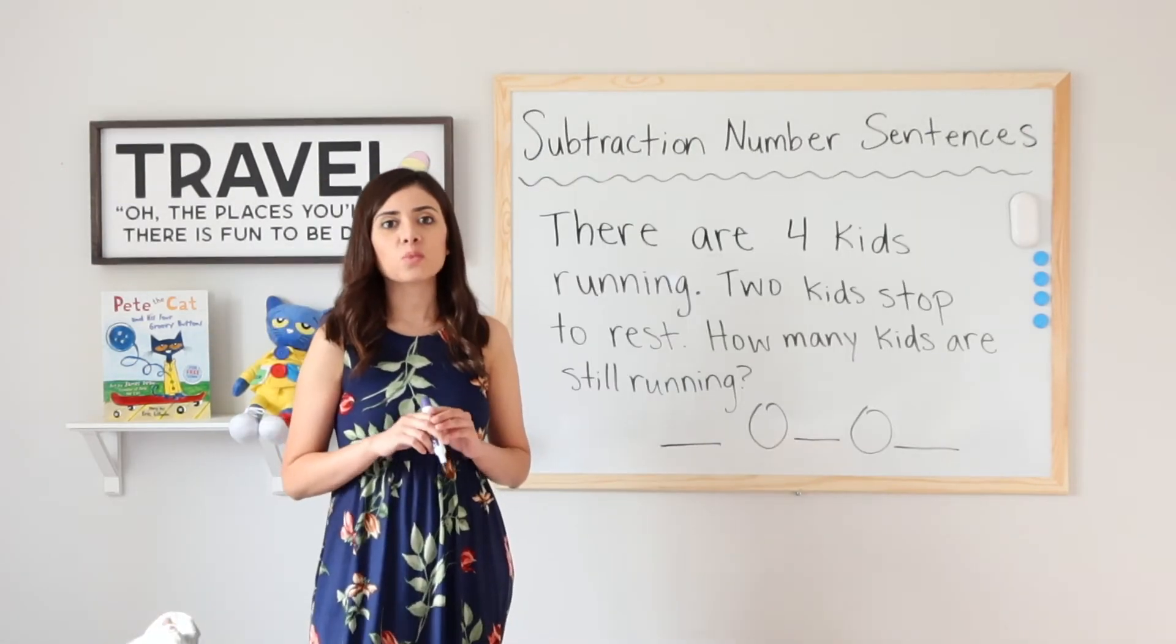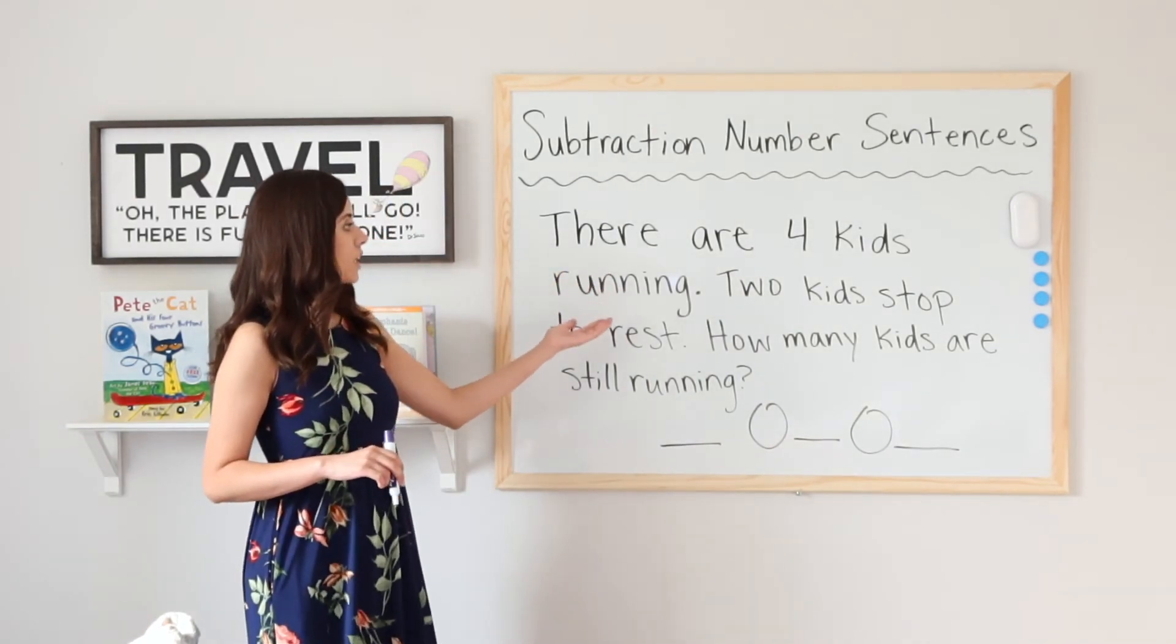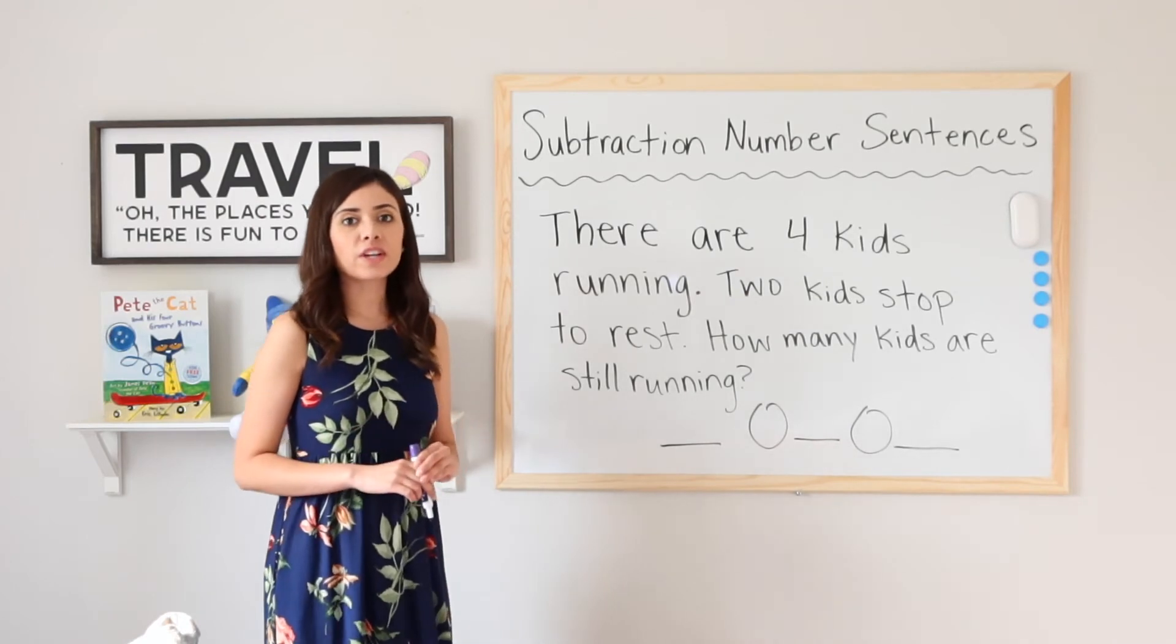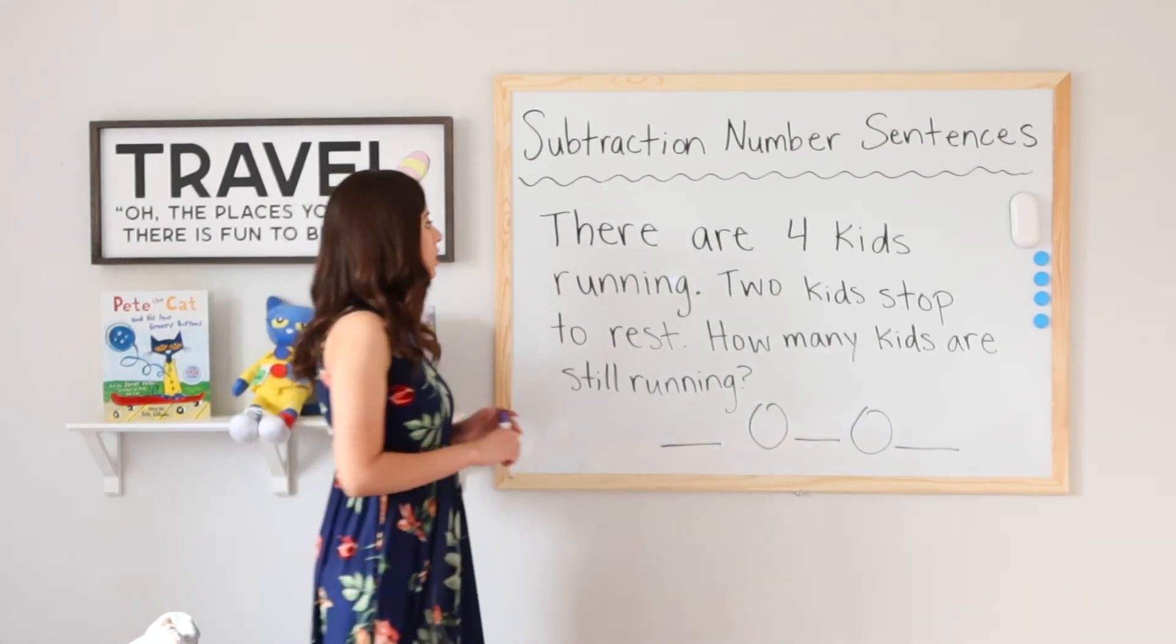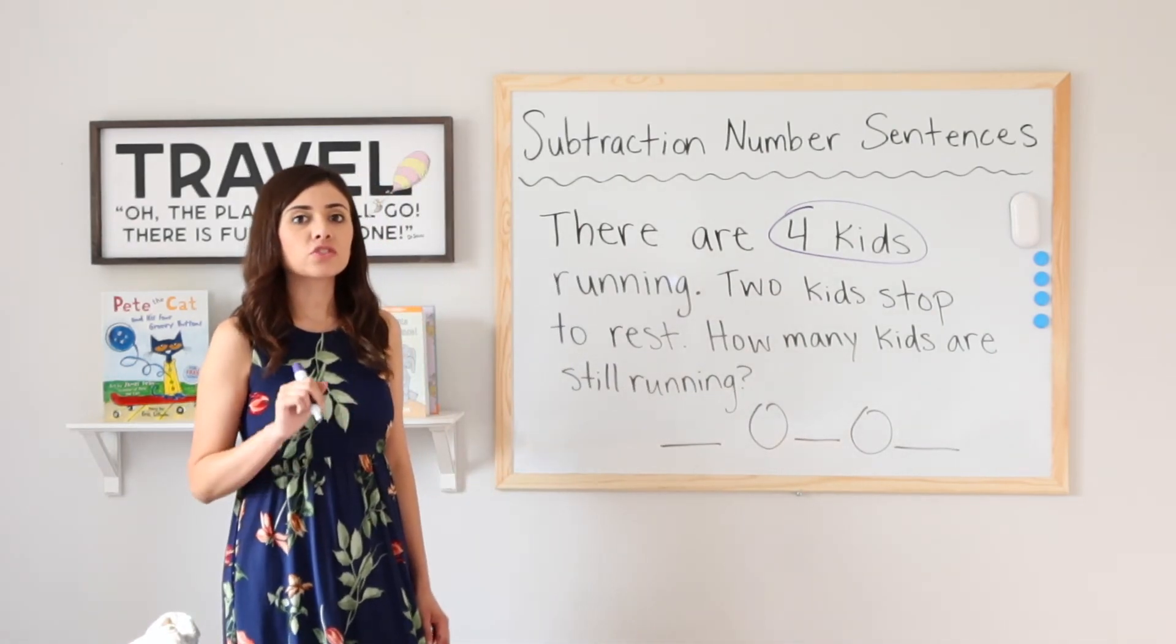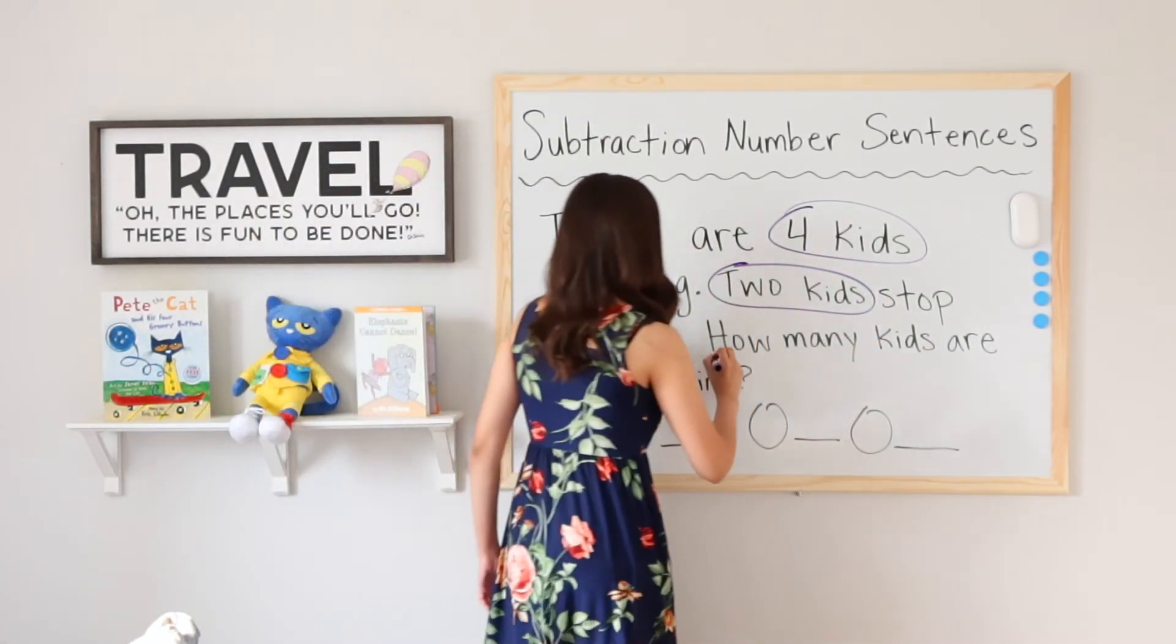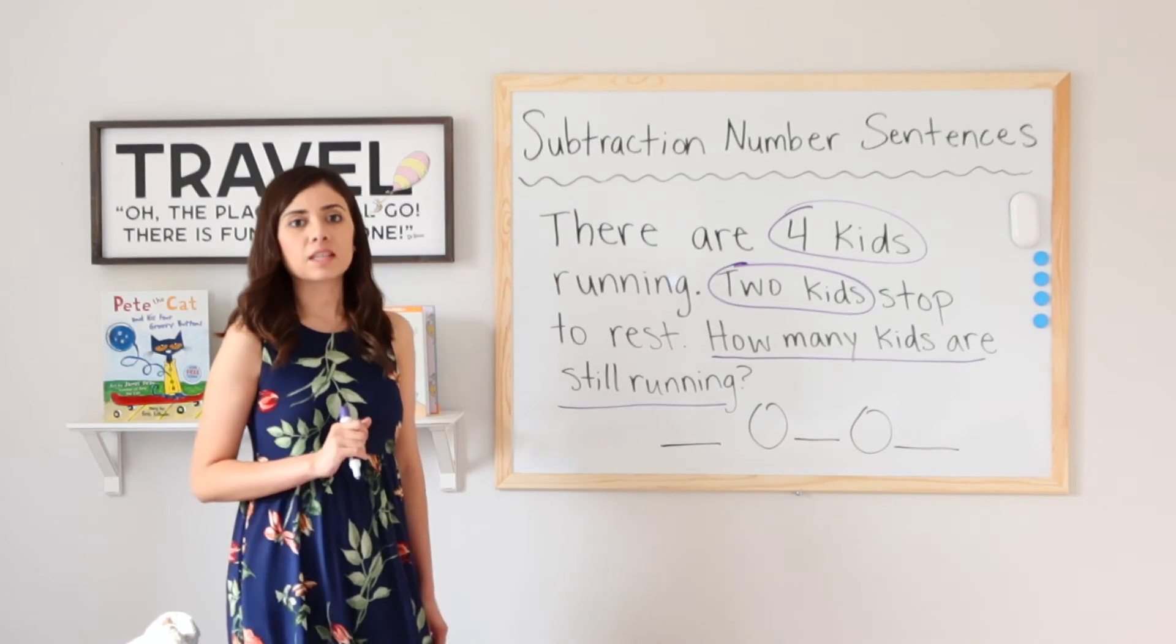Let's go ahead and try one more example. And this example will be a word problem. It says, There are 4 kids running. 2 kids stop to rest. How many kids are still running? So I want to start by circling what I already know. I know that how many kids are running at the beginning? 4. Good. So let's circle 4 kids. 2 kids stop to rest. 2 kids. Now I want to know how many kids are still running.